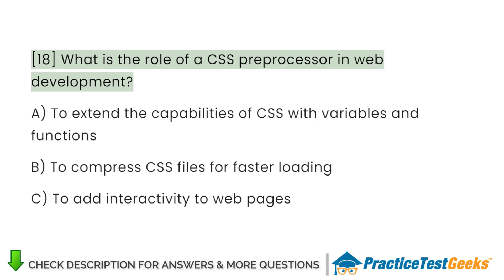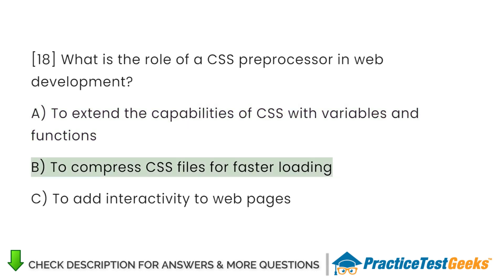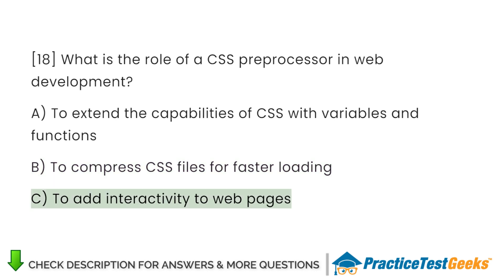What is the role of a CSS preprocessor in web development? A. To extend the capabilities of CSS with variables and functions. B. To compress CSS files for faster loading. C. To add interactivity to web pages.